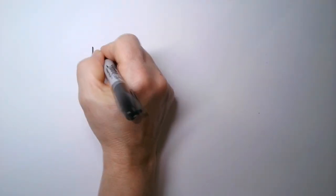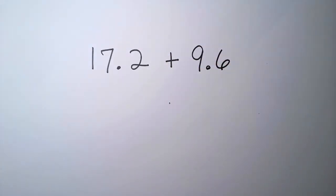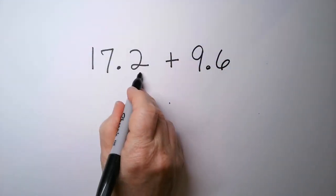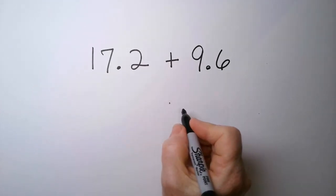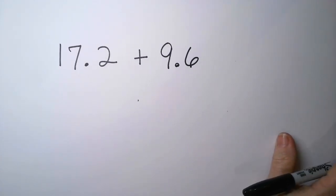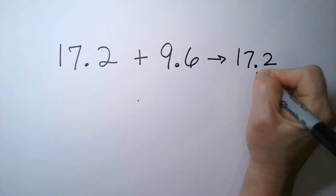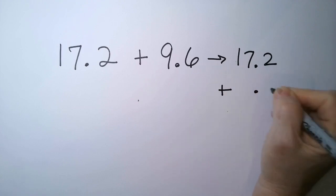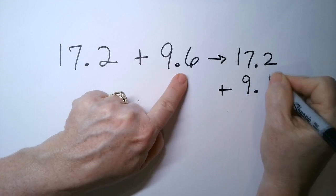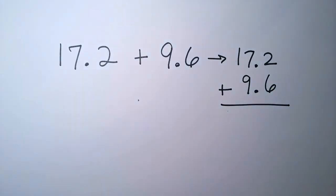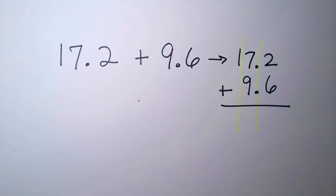Suppose I have 17.2 plus 9.6. So there are 3 digits here and 2 digits there. What do I do? So I want to write it vertically. So it's 17.2 plus, put the decimal point in, and then build out the number. So the 9 is on this side, the 6 is on that side. And then everybody stays in their own lane as you add the numbers.